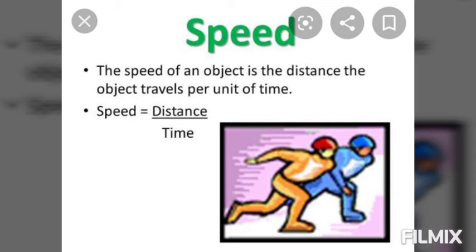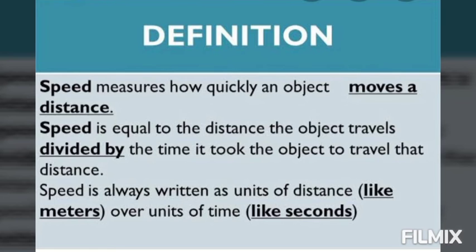Suppose you move from Boreli to Delhi. You covered a distance of 250 km in 5 hours. Then your speed will be 250 divided by 5, that will be 50 km per hour. The speed is distance traveled upon time taken.